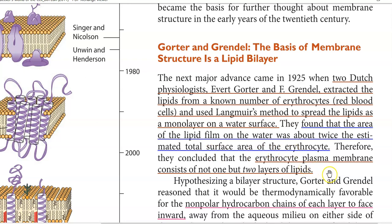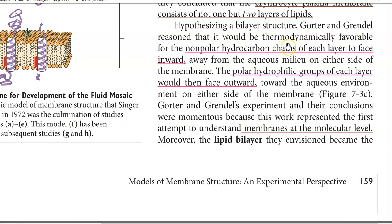They concluded that the erythrocyte plasma membrane may not have a single monolayer, but is made up of two different layers — two monolayers present together. Gorter and Grendel reasoned that thermodynamically, the non-polar hydrocarbon chains of each layer may be facing inward, whereas the polar hydrophilic groups of each layer would be facing outward. This is one of the important models that explained the functioning of the membrane at a molecular level.